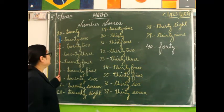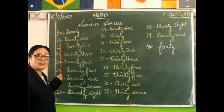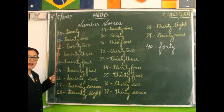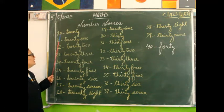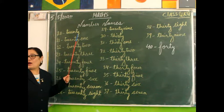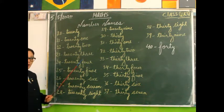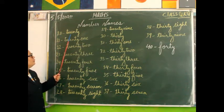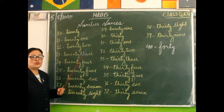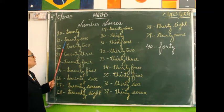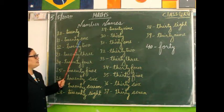20. Here I have written 20. I have started from 20. You have to write the number names. Names of 20. How to write 20? T-W-E-N-T-Y, 20. T-W-E-N-T-Y, 20.